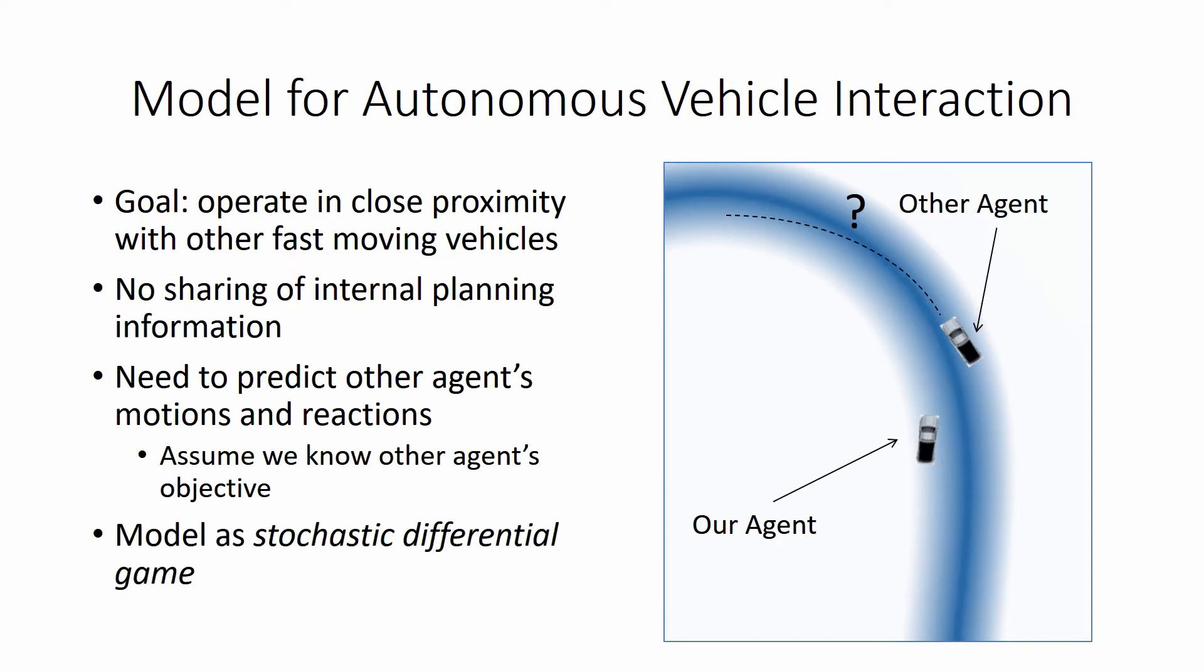We choose to model this problem as a stochastic differential game, which means that we compute a prediction for the other vehicle's motion by solving an optimization problem that takes into account both our agent's and the other agent's dynamics and objectives.